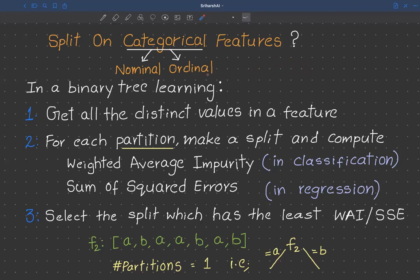For ordinal features, we can follow the same approach discussed for continuous feature splits. However, we cannot follow the same approach for nominal features. Nominal features are categories without any inherent order. For example, the feature 'color' has no inherent order — we cannot say red is greater than blue or green is less than yellow. There is no inherent order associated with nominal features.